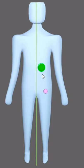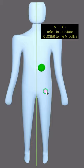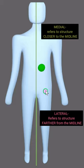As you can see there's a green and a pink mass on the body. The structure closer to the midline is said to be medial and the structure farther is lateral.